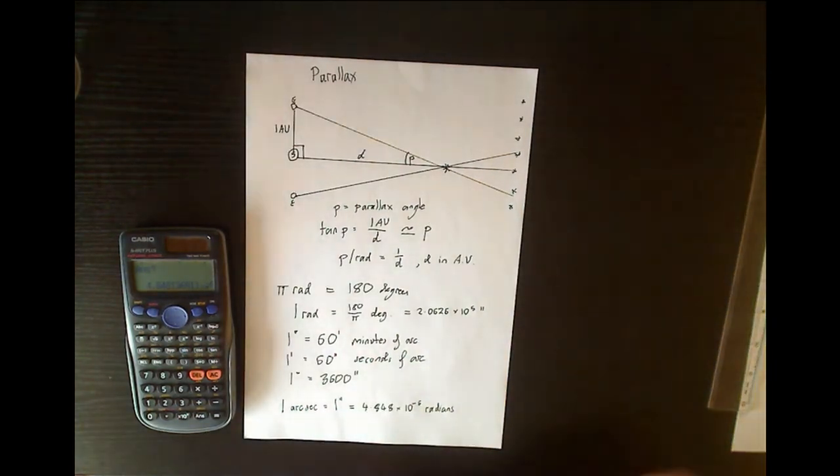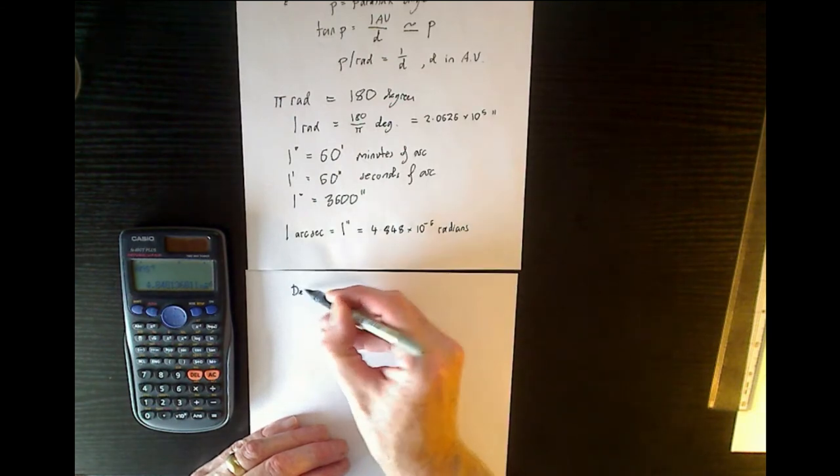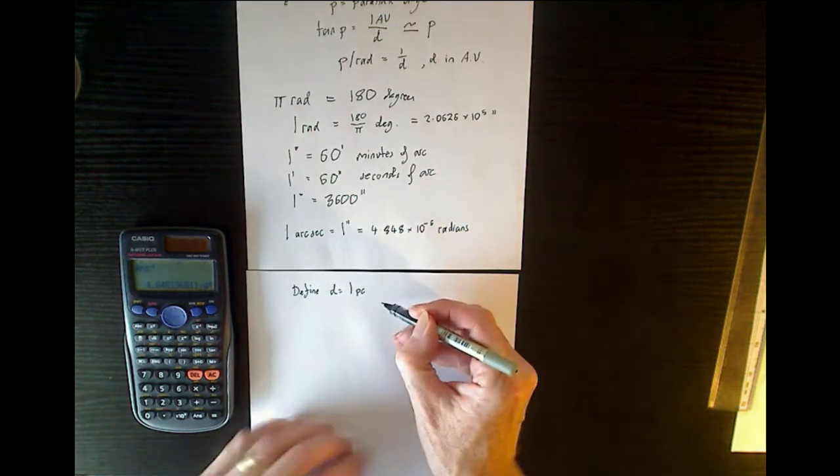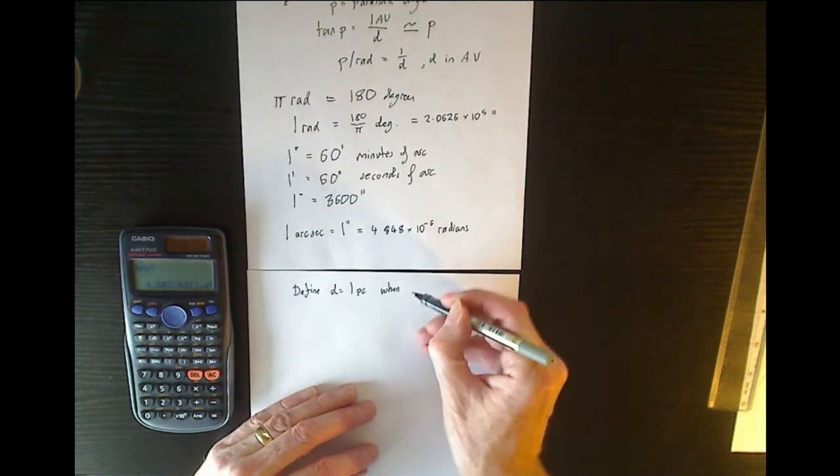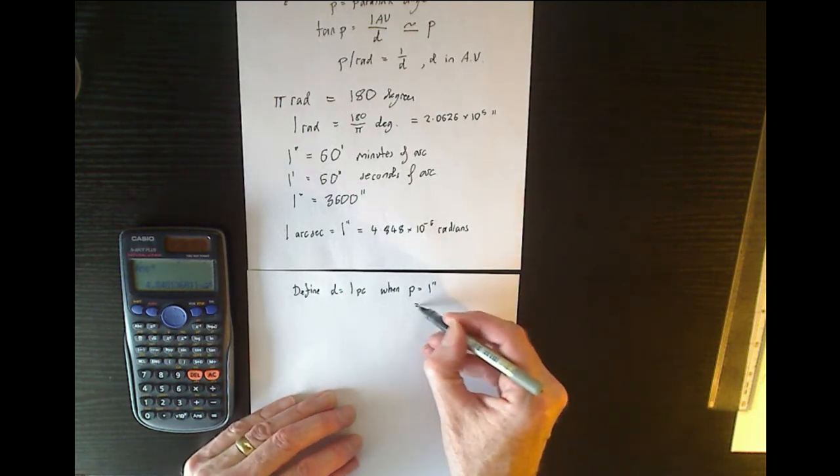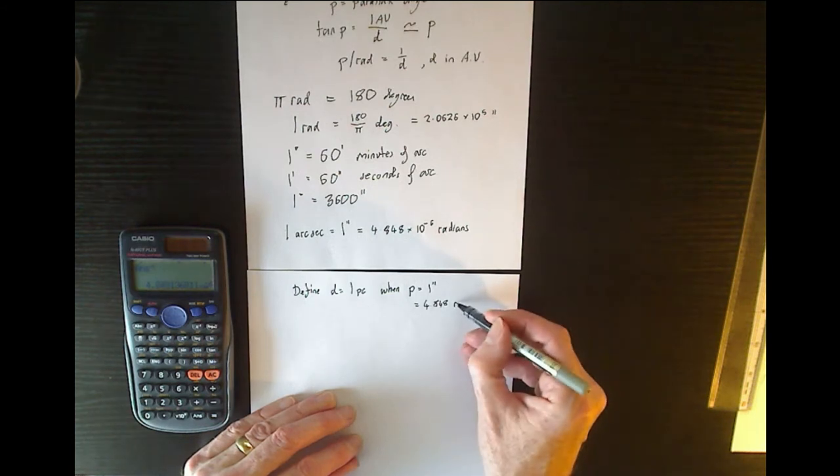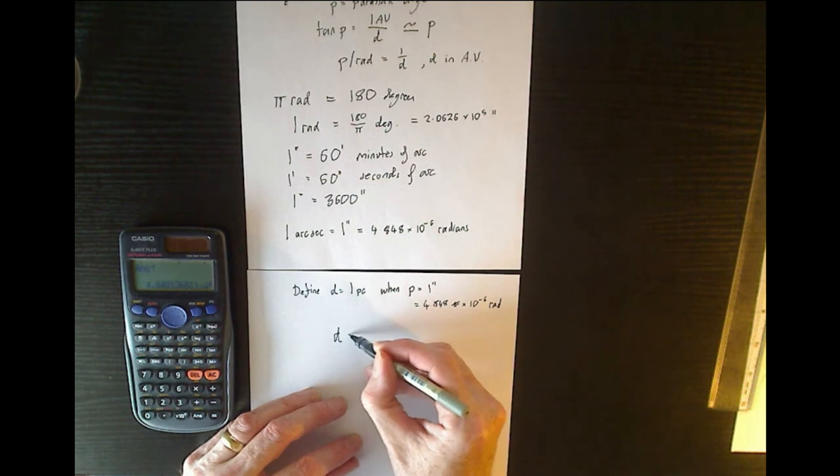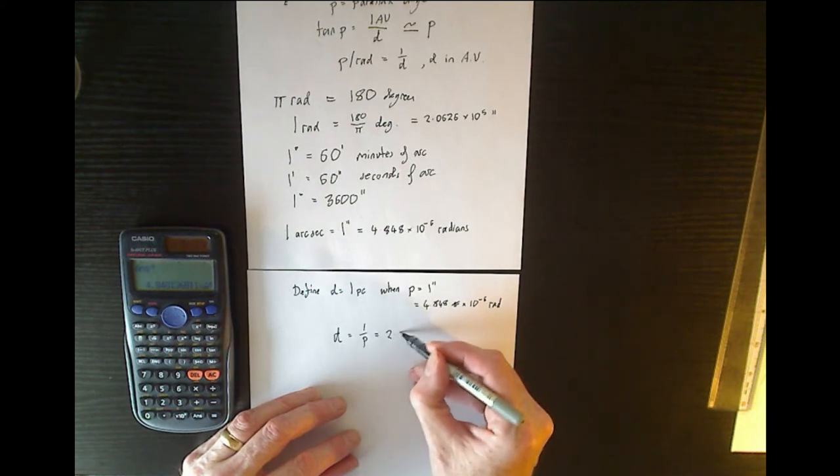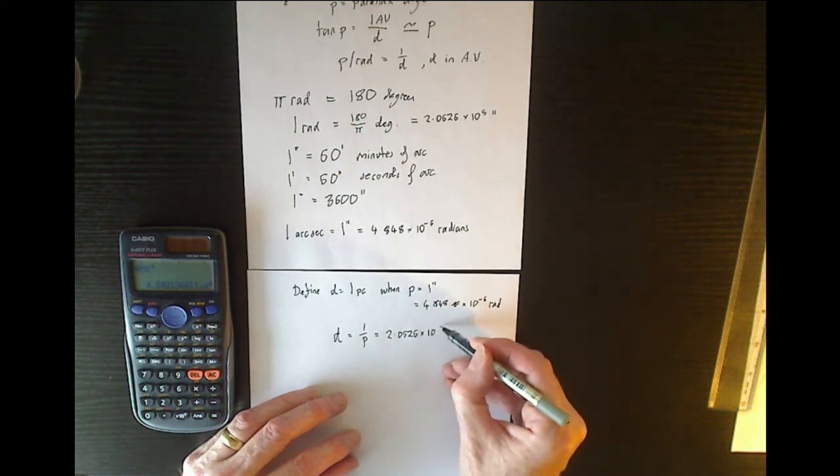Now that's going to be useful because the next step is to define the parsec. So we define a distance to be 1 parsec, written PC, when the star appears to have a parallax angle of 1 second of arc, which we now know is 4.848 times 10 to the minus 6 radians. So using the relation D equals 1 upon P, that again gives us 2.0626 times 10 to the power of 5 astronomical units.